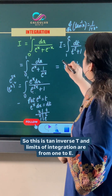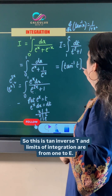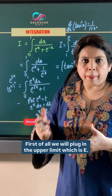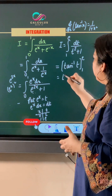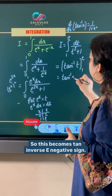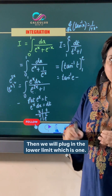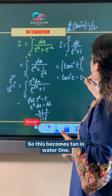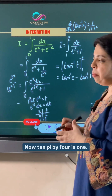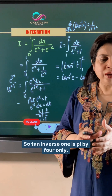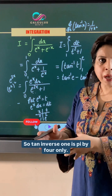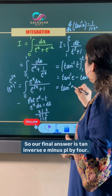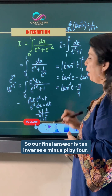So the result is tan inverse t evaluated from 1 to e. We plug in the upper limit e to get tan inverse e, then subtract the lower limit: tan inverse 1. Since tan(π/4) equals 1, tan inverse 1 equals π/4. Therefore, our final answer is tan inverse e minus π/4.